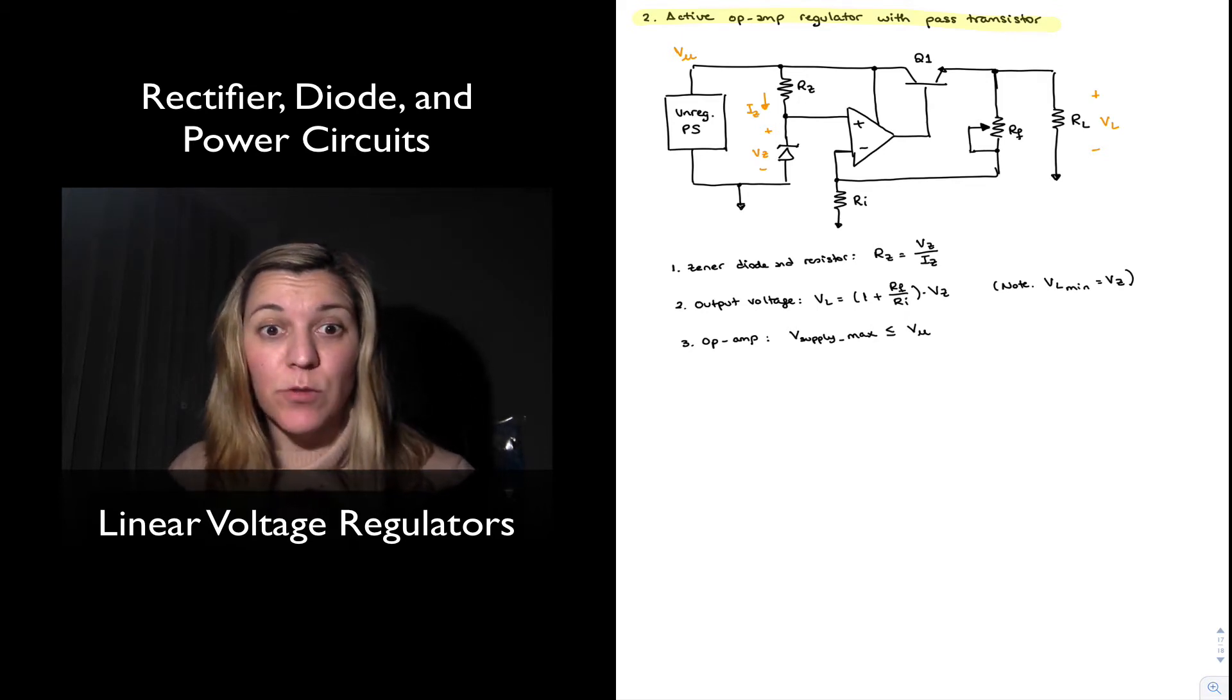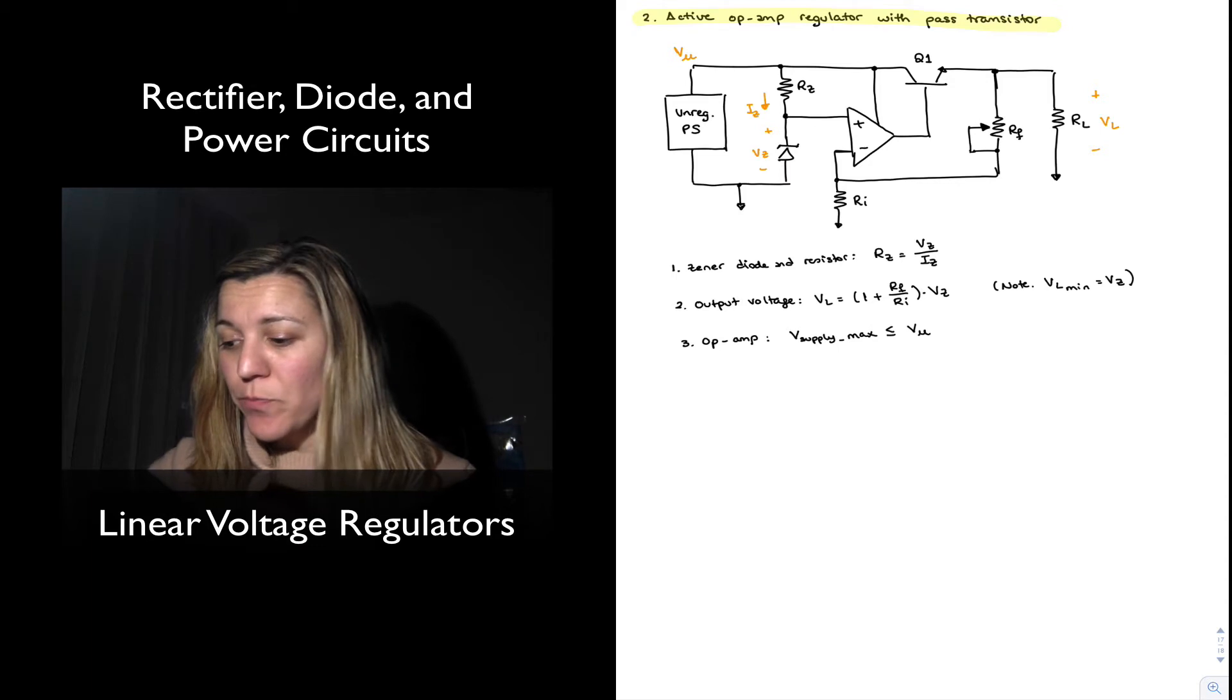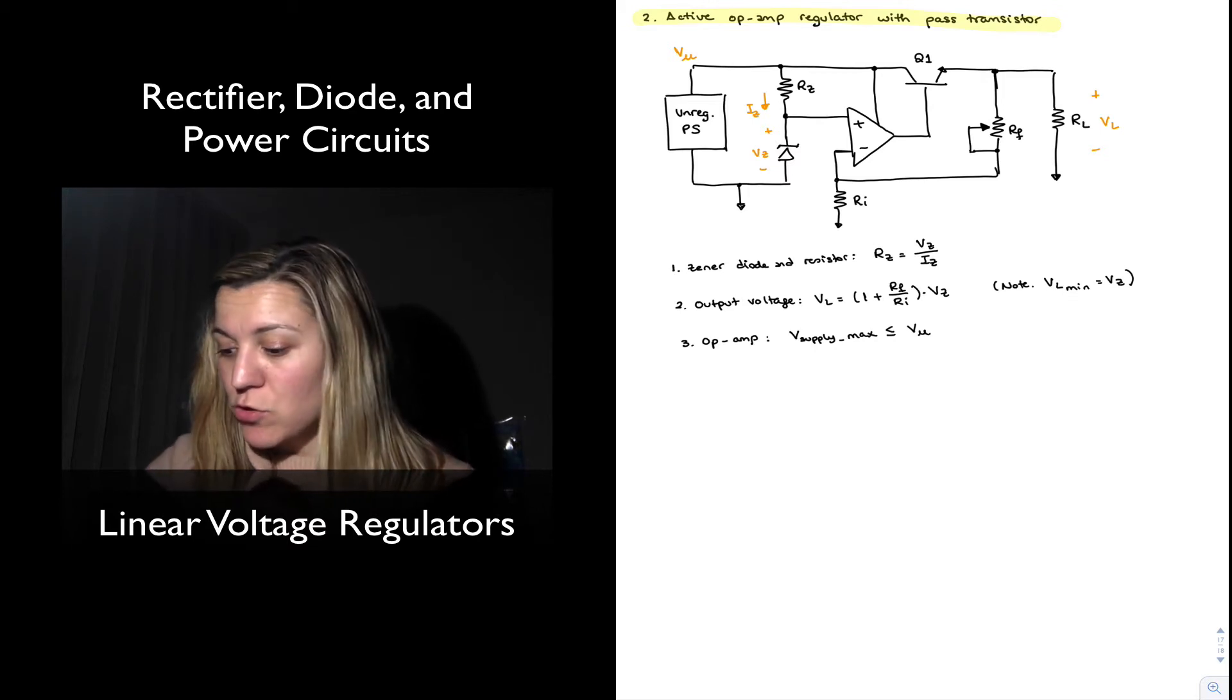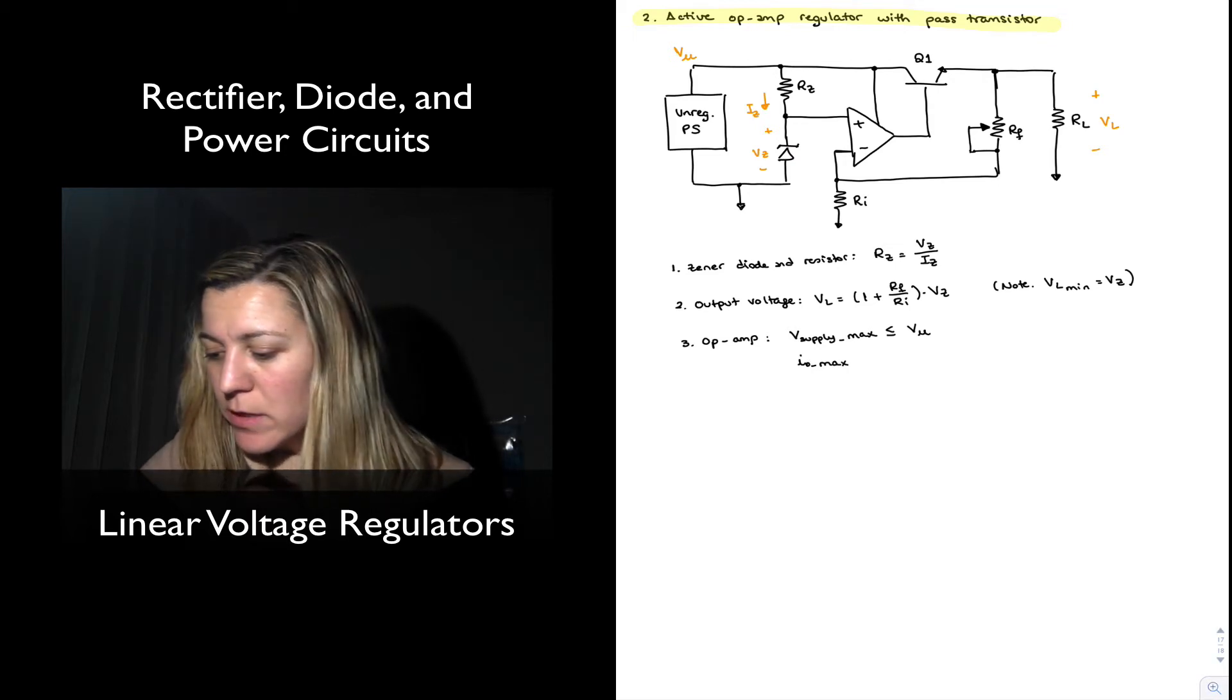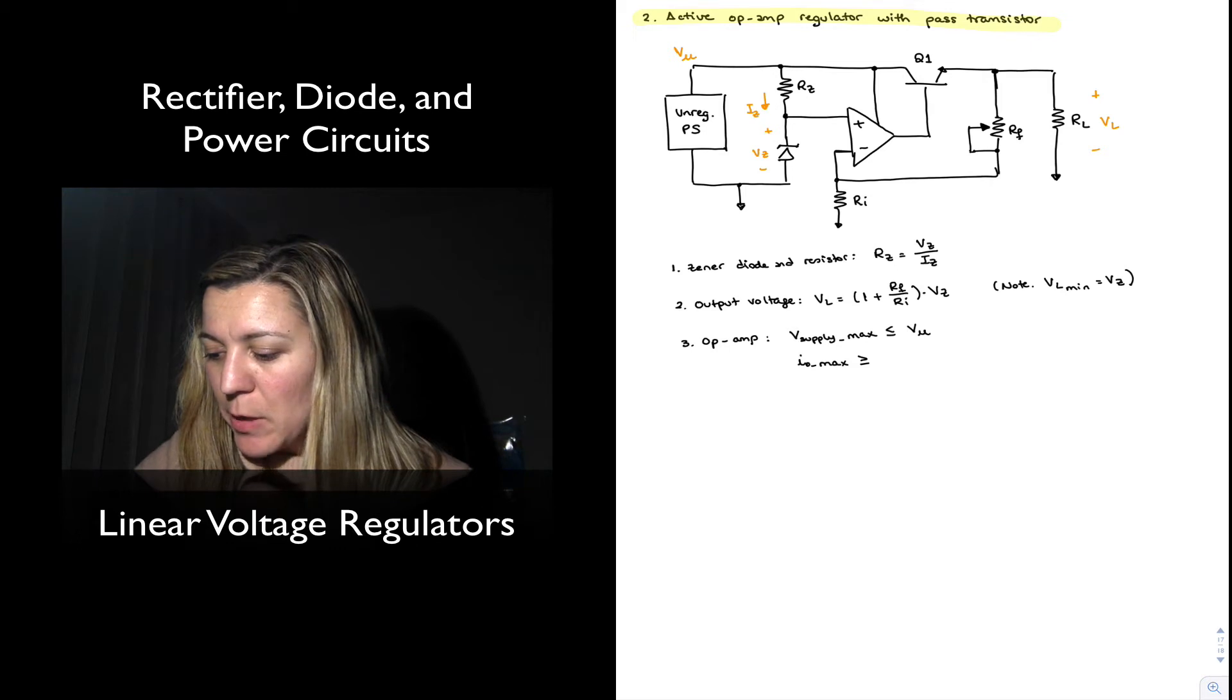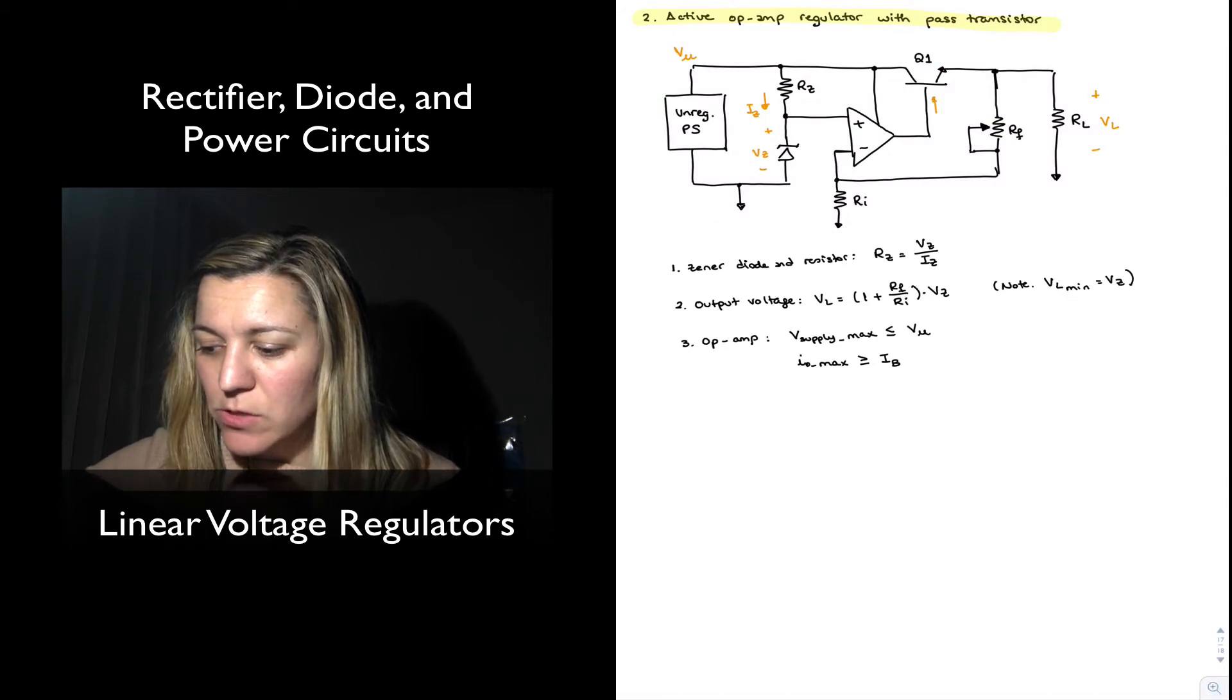Typically I will need for that supply to be also a couple of volts higher than my maximum output voltage, but also notice that the op-amp has to provide the output current for that pass transistor. And so I'm going to say that my I out max needs to be greater than or equal to IB. IB, of course, being the base current that's needed for my transistor.